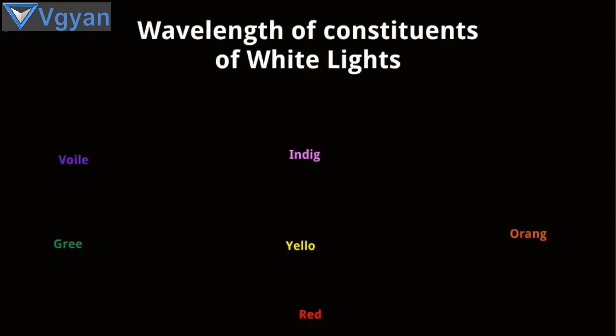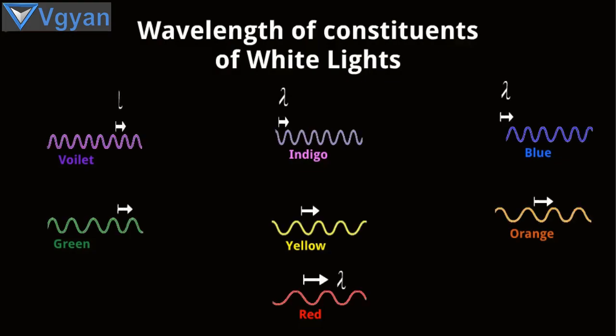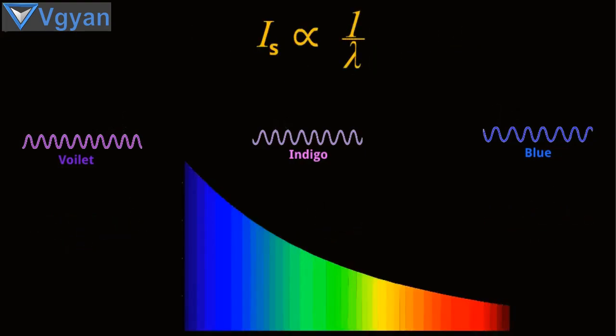Now take a look at the wavelength of all constituents of white light. The white light coming from the sun consists of seven different lights of primary colors. Each light has its own frequency and wavelength. As shown here, violet light has the shortest wavelength of all, while red light has the longest wavelength.